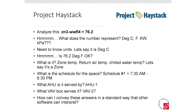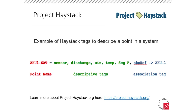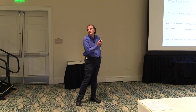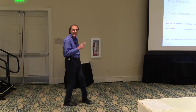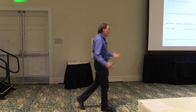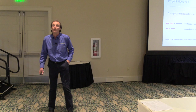Here's an example of the problem: what does ZN3WWFL4 mean? Here's how that would get marked up with a set of Haystack tags. In red, we've got the point name in the BAS system — we know there's a huge problem with point names, no standards, everybody names them differently. We're never going to solve that problem. But we can come up with a uniform way to say what it means. In green, a tag says this is a sensor as opposed to an output. This is discharge air, and we're measuring temperature in degrees Fahrenheit. Plus an association tag — the air handler ref or schedule ref. With those tags on a piece of data, software can automatically consume, analyze, and present the data to help us accomplish our end goals.